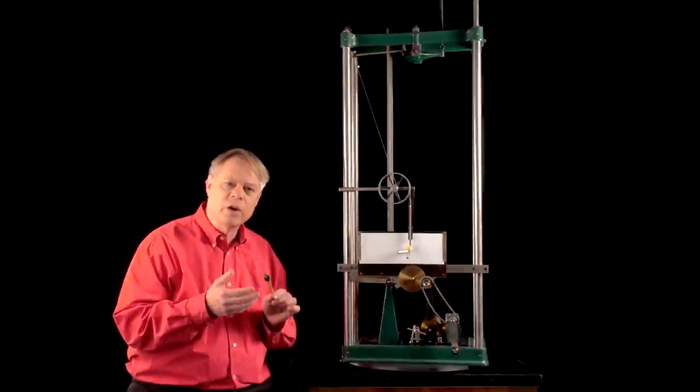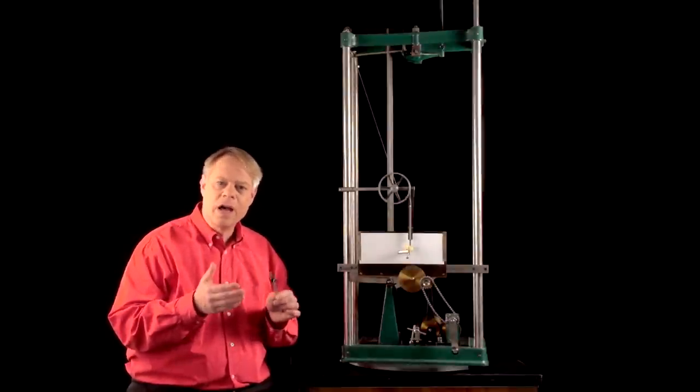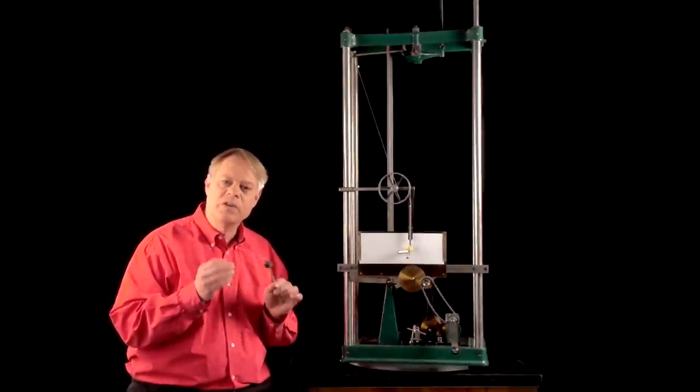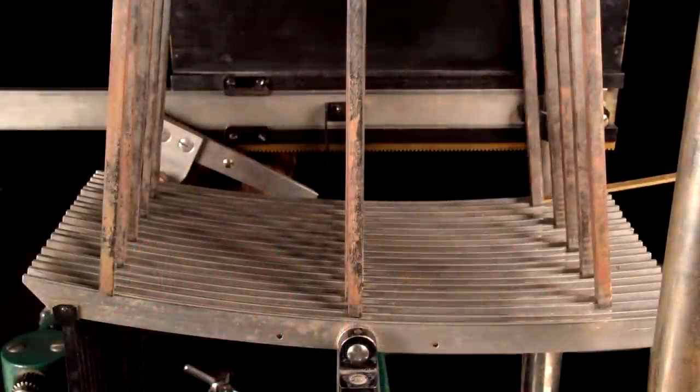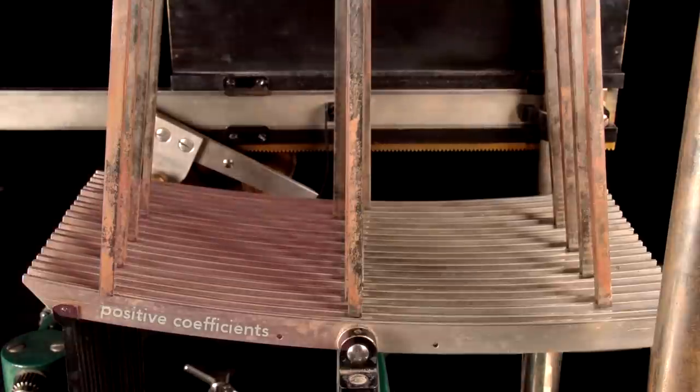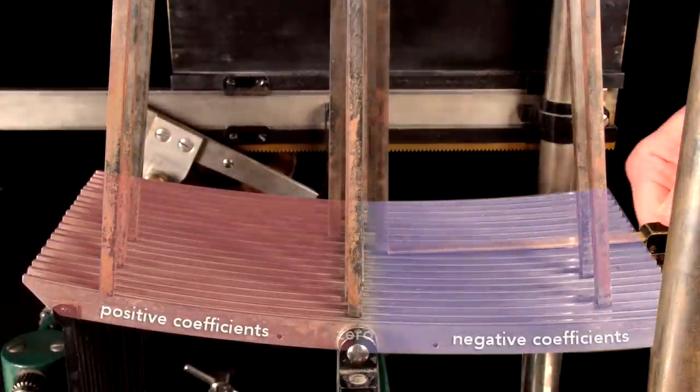Recall this measuring stick goes from 0 to 10. So how do we set negative amplitudes? We set the measuring stick to the magnitude we want and use it on the opposite end of the rocker arms. On the left are the positive coefficients and on the right side are negative coefficients.